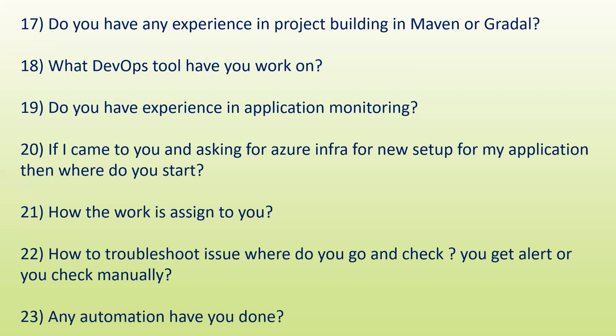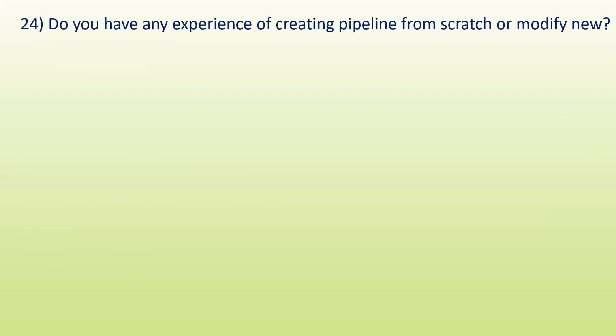Next: have you done any automation? If you've done automation, tell them. Next: do you have any experience creating a pipeline from scratch or modifying a new pipeline? If you created a pipeline from scratch, tell them the procedure. If you used an existing pipeline, explain how you modified it, including branching and other details.